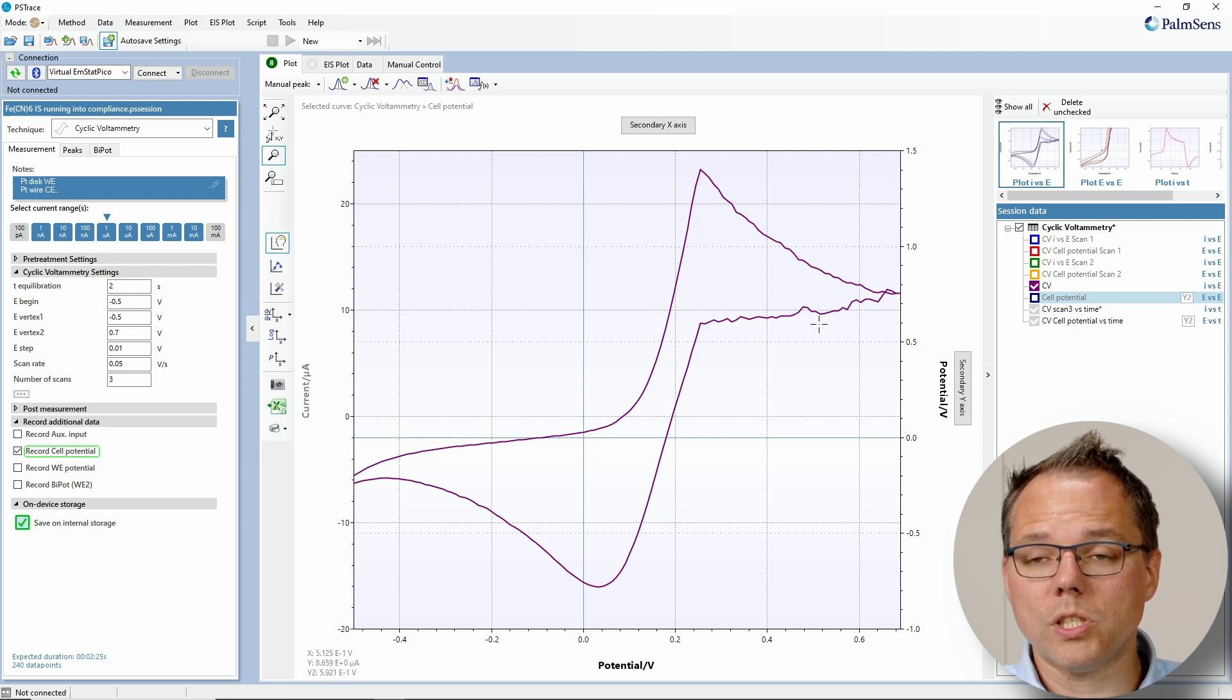I wonder, did I run into my compliance voltage? An easy way to find out is if you have one of our newer devices like the PalmSense 4, the Emstat 4, or one of the Sensit devices, you can just click on record additional data and choose to record the cell potential. And this you need to do before the measurement, and then during the measurement you will record the cell potential.